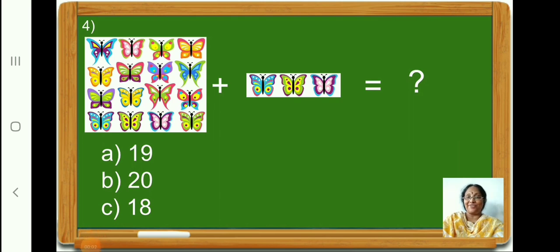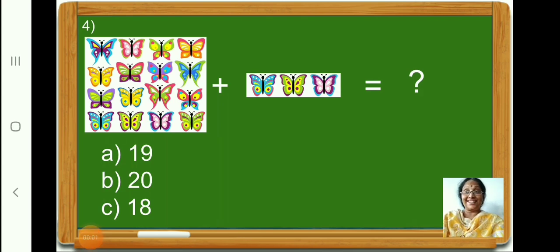Now let us do question number 4. Here in the left hand side box, count and see how many butterflies are there. Yes, there are 16 butterflies. And on the right hand side box, how many butterflies are there? 3. Therefore, we have to add 16 plus 3 butterflies. 16 plus 3 is 19. Therefore, let us put a tick for the correct option A.